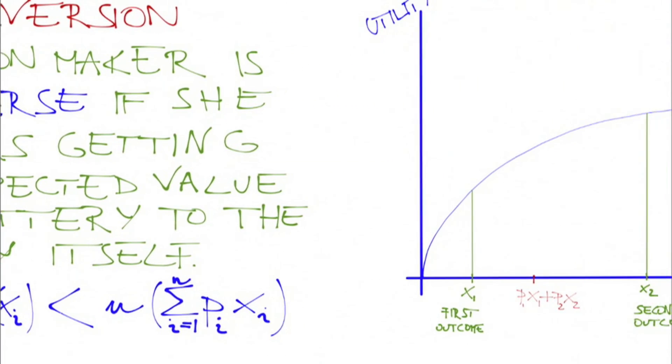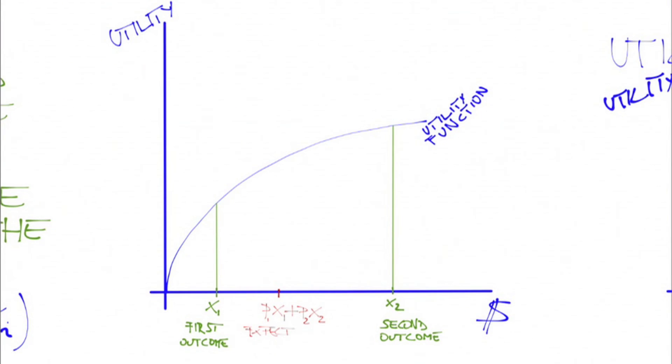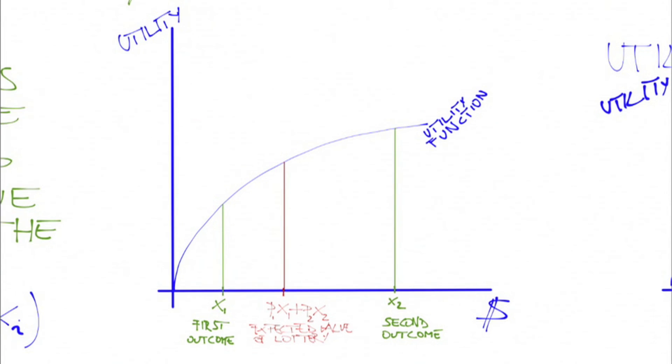Her expected utility from the certain outcome is just the Bernoulli utility of that outcome. Graphically, it is the value of the Bernoulli utility function at the expected value of the lottery.